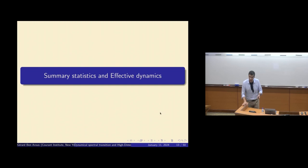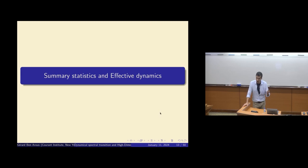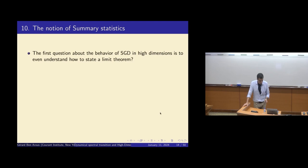Let me now go to what we are doing here. I will introduce the notion of summary statistics and effective dynamics — this was already in the 2022 paper. I'm saying 'summary' and not 'sufficient,' because sufficient statistics means something specific in statistics. I don't want to imply it's the same thing, and likewise for 'effective.'